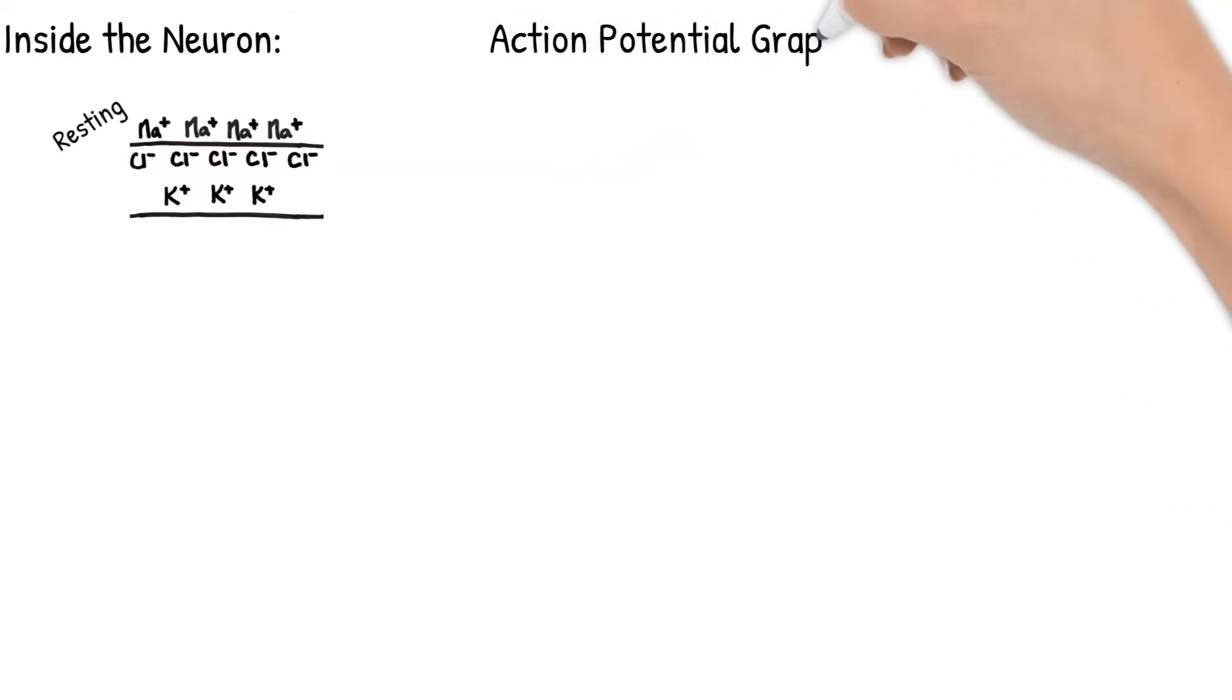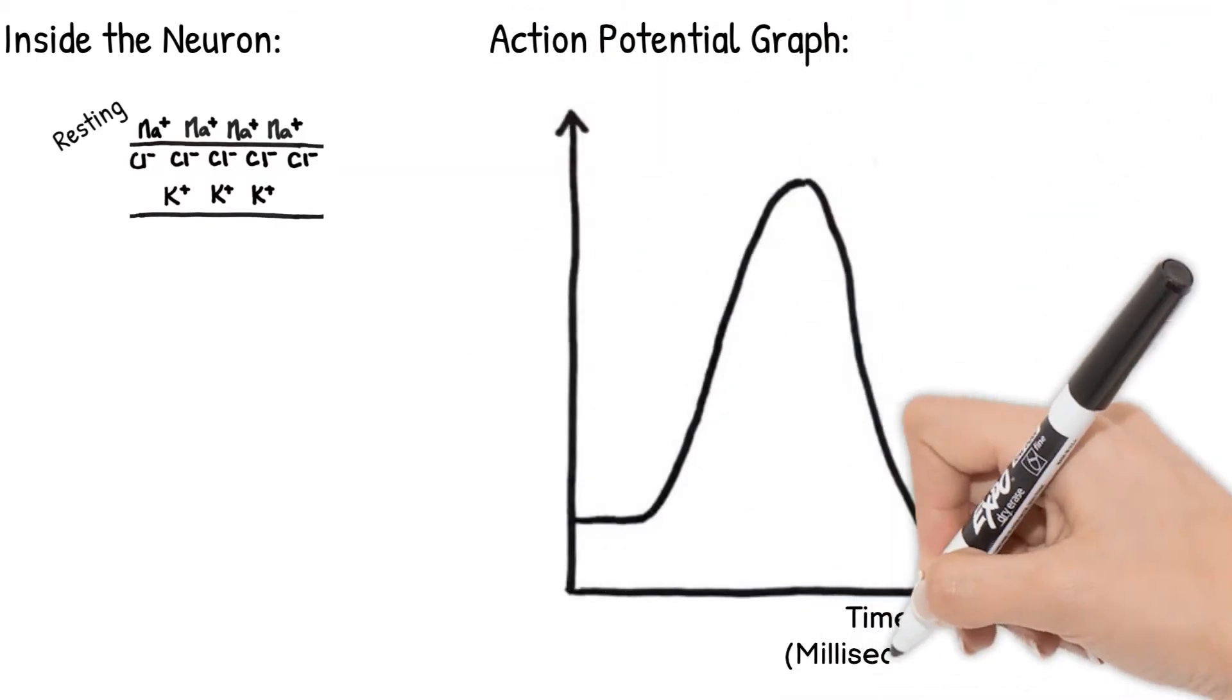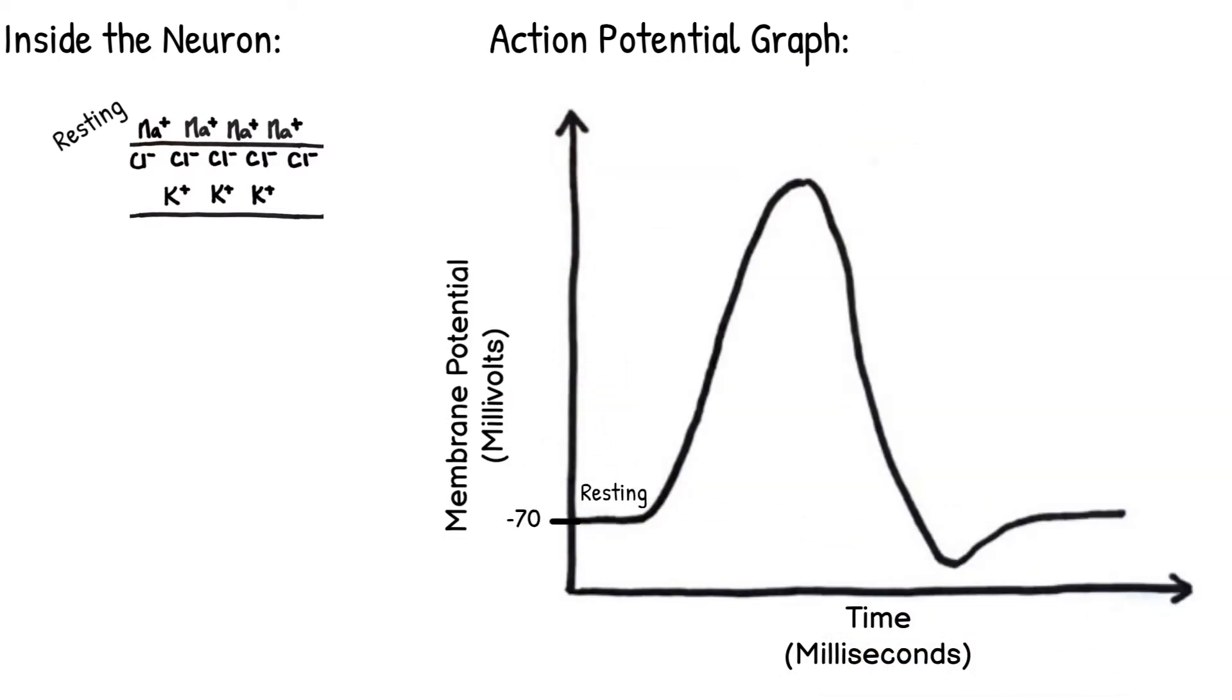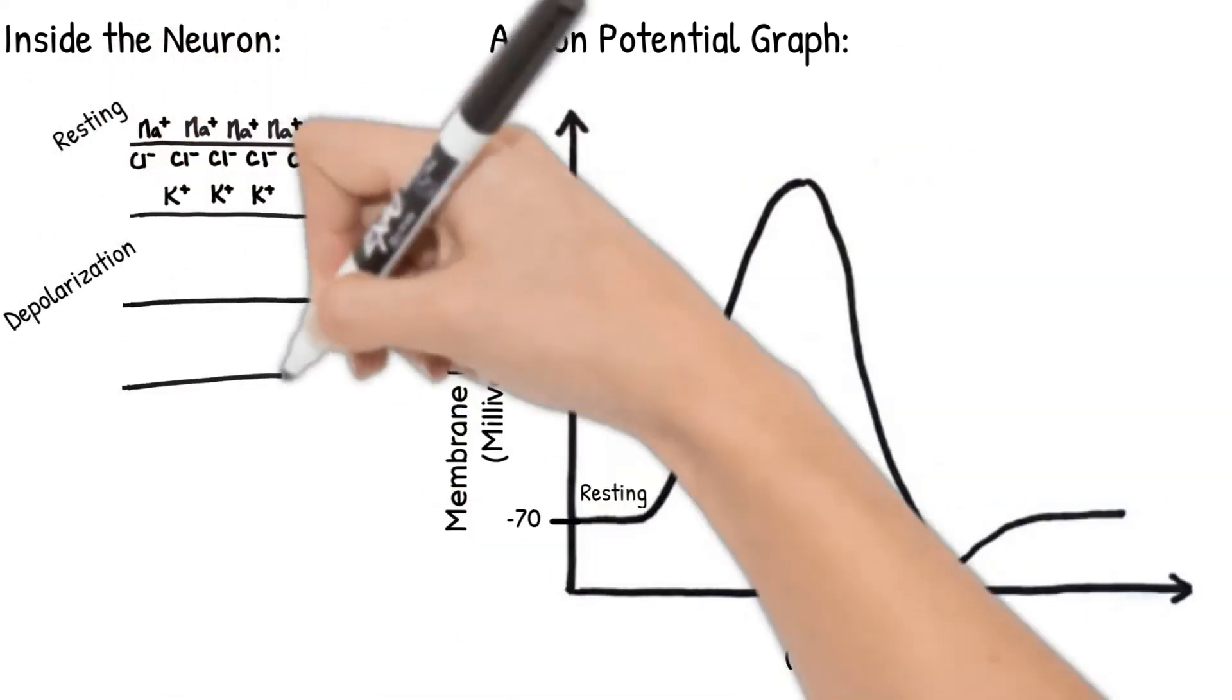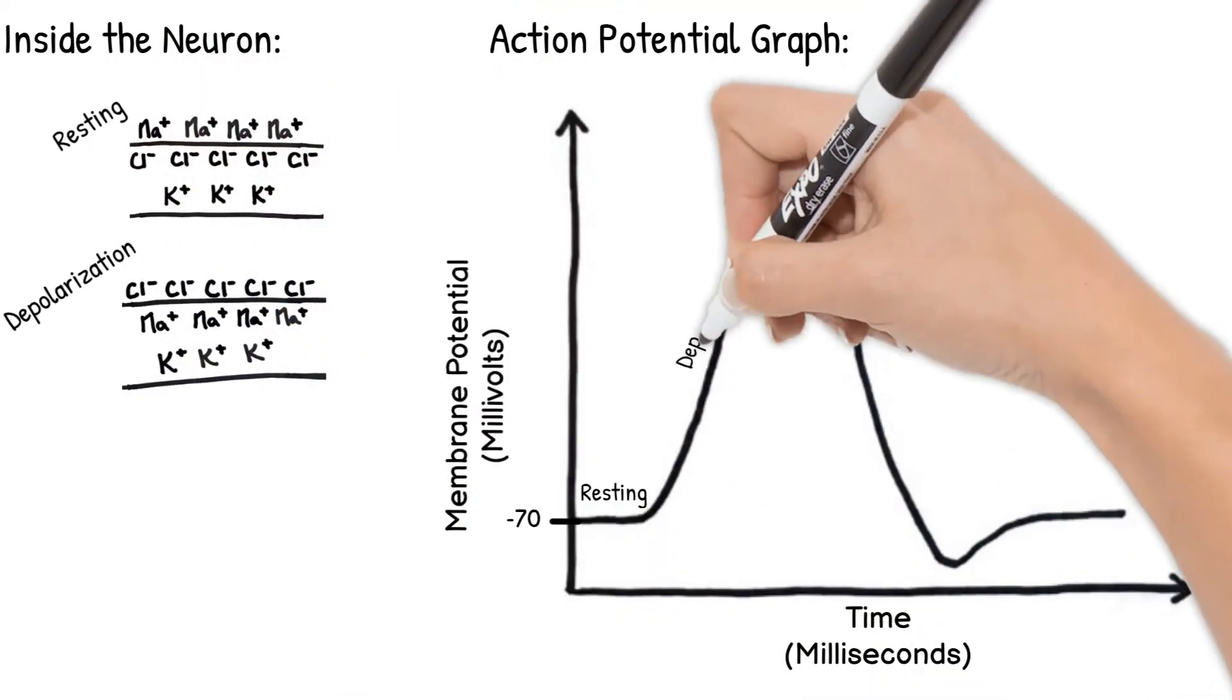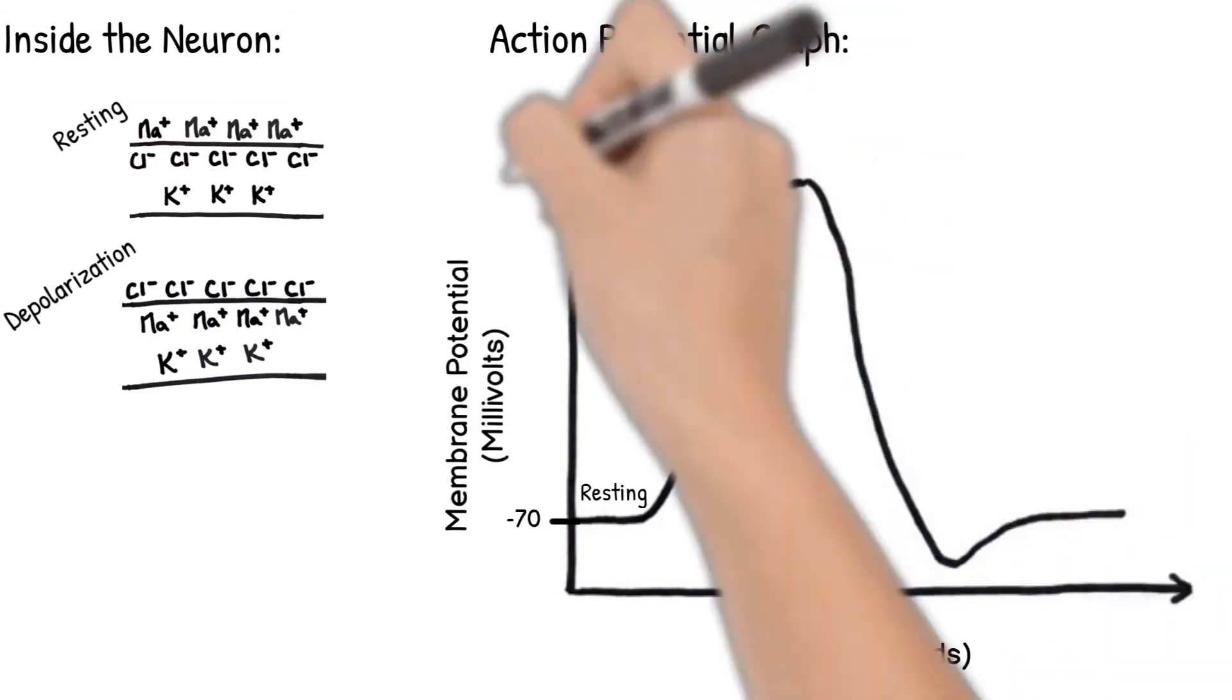Looking at the neuron charges on a graph, here is our resting neuron at negative 70 millivolts. Depolarization, remember, happens with those sodium gates opening, and it gets to about 40 millivolts.